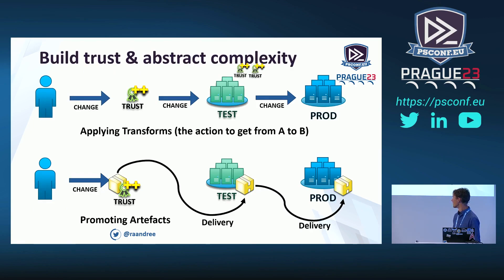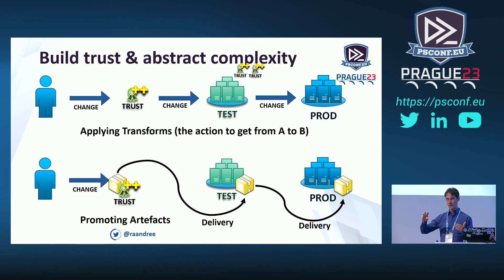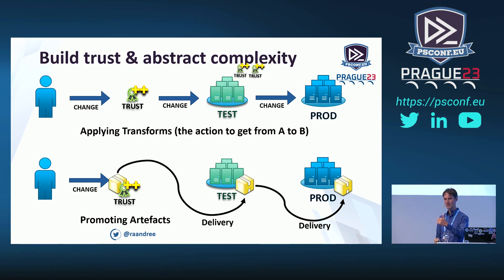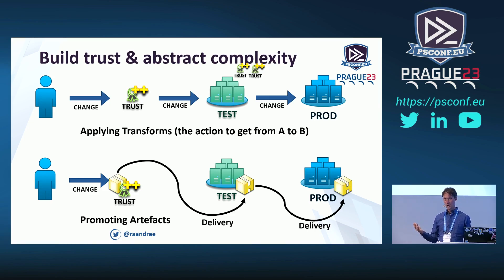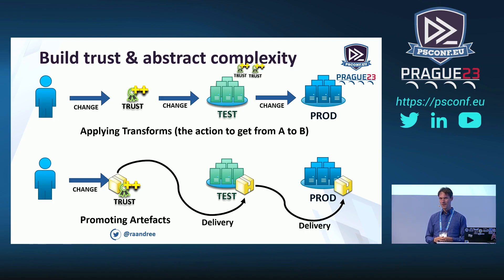The usual flow: you make a change in dev, verify it works, add some trust, then move to test, verify again, present to the change board, and finally push to production. But then you might have an evening with a few too many beers and the next morning implement the change slightly differently than planned — and then all those procedures have been in vain because you haven't worked exactly as expected.